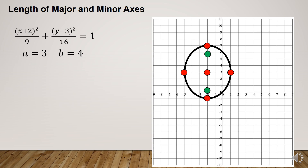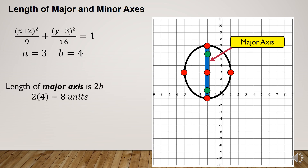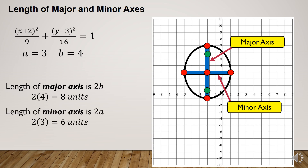The length of the major and minor axes: the major axis is the vertical axis, and its length is 2b. Since b equals 4, the length of the major axis is 2 times 4 equals 8 units. The minor axis is the horizontal axis, and its length is 2a. Since a equals 3, the length of the minor axis is 2 times 3 equals 6 units.